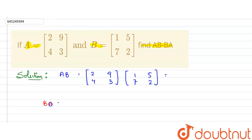So BA will be calculated using BA. Here let's write matrix B first. So 1, 7, 5, 2 here and multiply with A matrix 2, 4, 9 and 3 here.